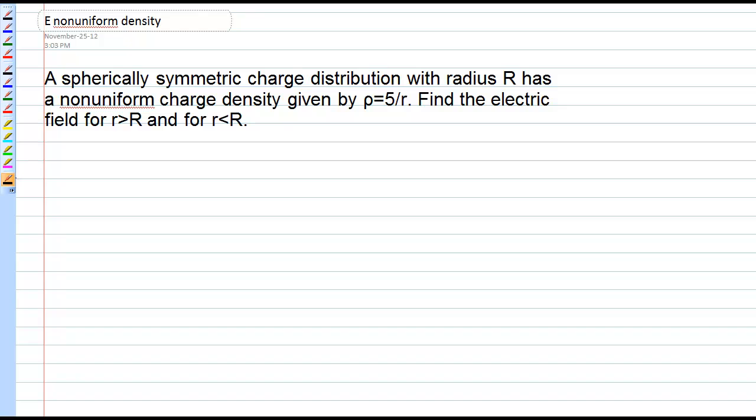This problem also has non-uniform charge density, which means we're going to have to integrate to find the charge inside our Gaussian surface. Our charge distribution is spherical with radius R, and the charge density is non-uniform and increases as you go closer to the center, which means there's much more charge closer to the center of the sphere than there is at its surface.